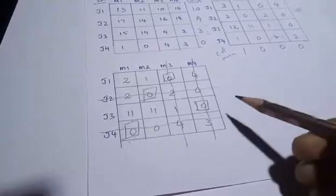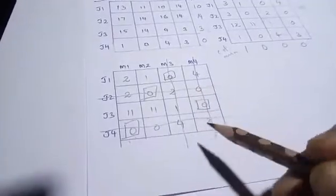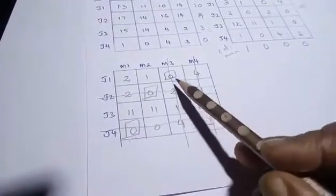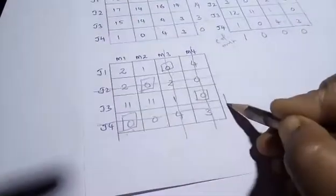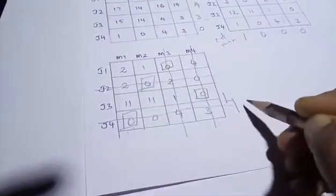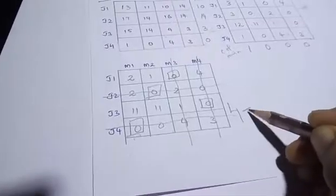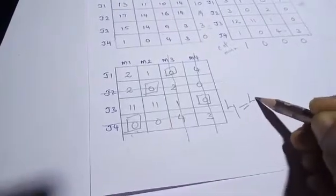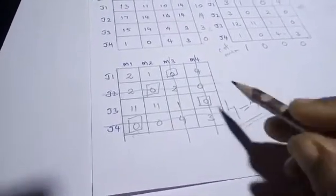Now count the number of marked zeros: one, two, three, four — four marked zeros. And how many rows are there? Four rows. So four equals four, which means the assignment is correct and complete.